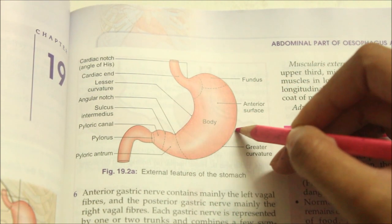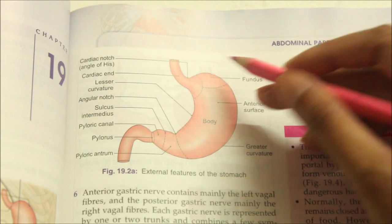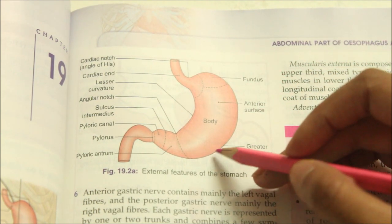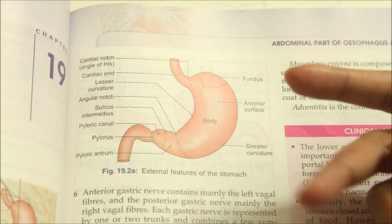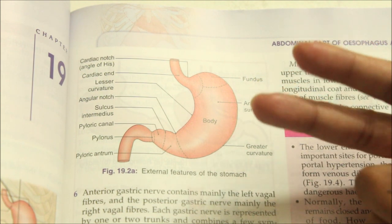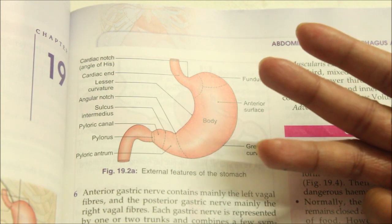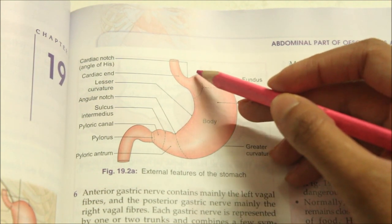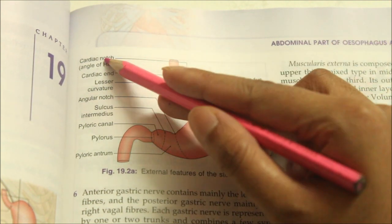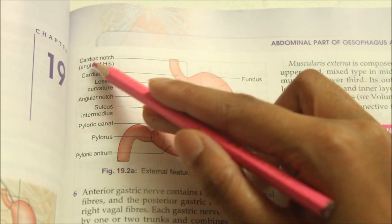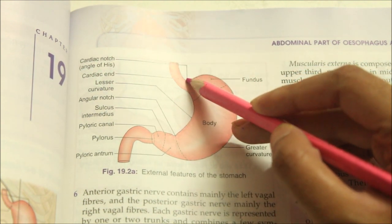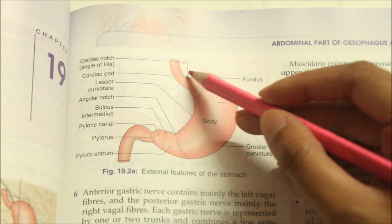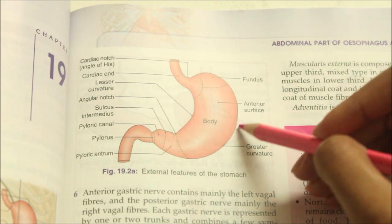The greater curvature is convex and forms the left border of the stomach. It provides attachment to the greater omentum, the gastrophrenic ligament, and the gastrosplenic ligament. At its upper end the greater curvature presents the cardiac notch — the angle of His — which separates it from the esophagus. It is five times as long as the lesser curvature.